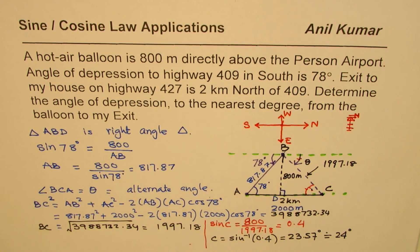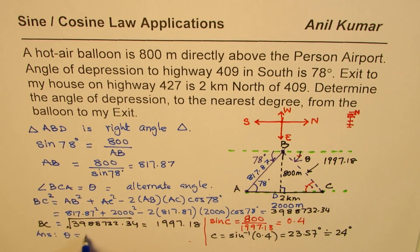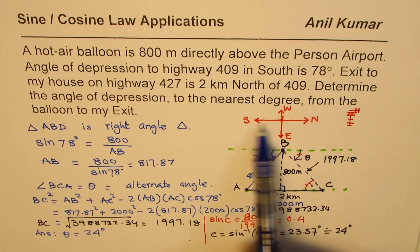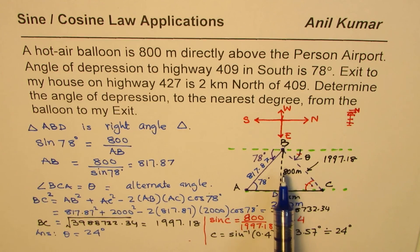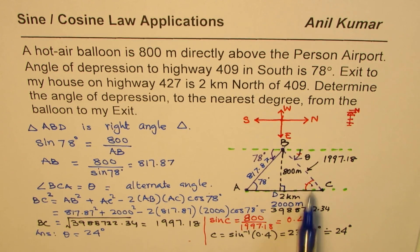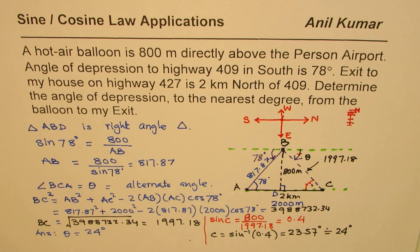Angle C is the angle of depression, so our answer is that the angle of depression theta equals 24 degrees. In this problem, the first step was to sketch the diagram. I found it convenient to place north-south horizontally. Then we applied the sine law to find one side, the cosine law to find another side, and then the basic trigonometric ratio sine theta to find the angle — which equaled the depression angle since they were alternate angles. I hope that helps. Thank you, and all the best.